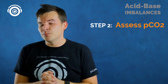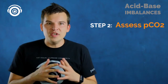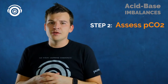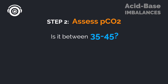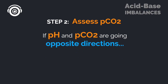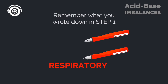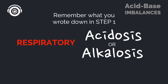Step two is to look at the CO2 level. Remember what regulates CO2 — breathing. If you get mad and upset, you blow off a lot of CO2. Look at CO2 and ask: is it between the normal range of 35 to 45? If not, it's abnormal. Then look at pH and assess the two together. If CO2 is going the opposite direction of pH — one up and one down — that's a respiratory problem. If you already have acidosis or alkalosis written down, you have your answer: respiratory acidosis or respiratory alkalosis.